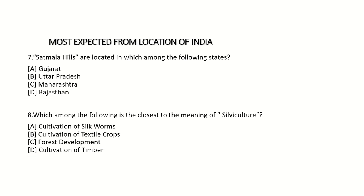Seventh question: Satmala hills are located in which among the following states? Option A: Gujarat. Option B: Uttar Pradesh. Option C: Maharashtra. Option D: Rajasthan. Answer: Option C — Maharashtra.